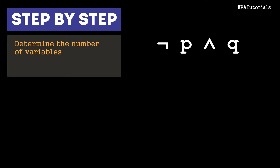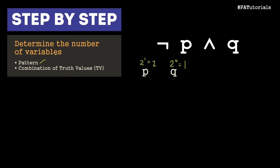Let's start with our first example, which is not P and Q. The first step is to determine the number of variables. In this way, we'll know the pattern in the truth table and the combination of truth values. For this problem, the number of variables is two, which is P and Q. Q is 2 raised to 0, which is 1, and P is 2 raised to 1, which is equal to 2. These values of 2 and 1 are the patterns we'll use.